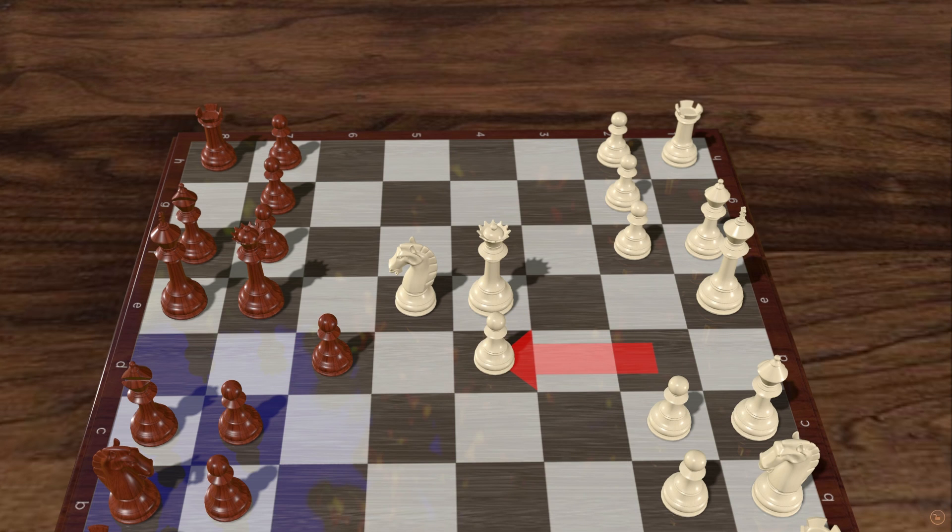After the exchange, white will be a pawn ahead. So we must take a different approach.